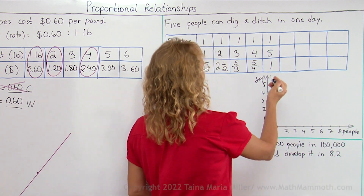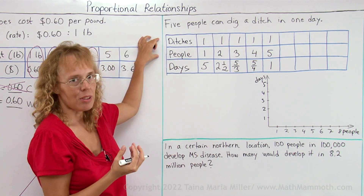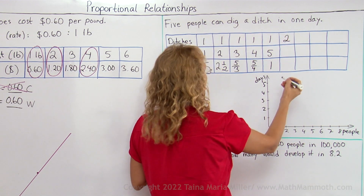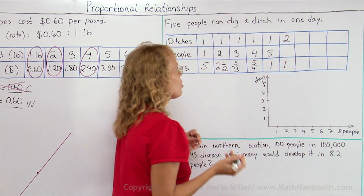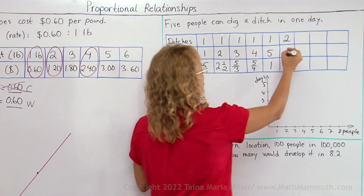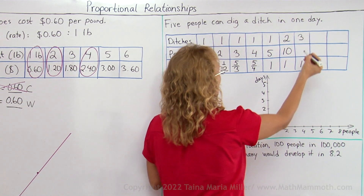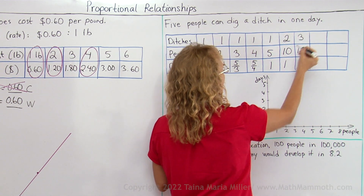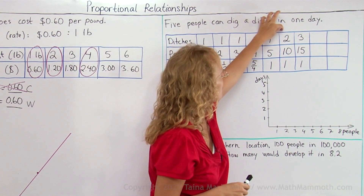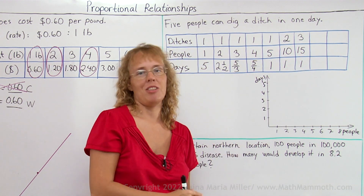Now, you could also examine the situation between the ditches and people — these two variables. If you said, okay, how about two ditches, and if the days are the same — if there's two ditches and just one day — then you need double the amount of people. And if there's just one day and you want three ditches done, then you would need 15 people. So between the ditches and people, whenever ditches increase by one, people increase by five. So that is a proportional relationship.